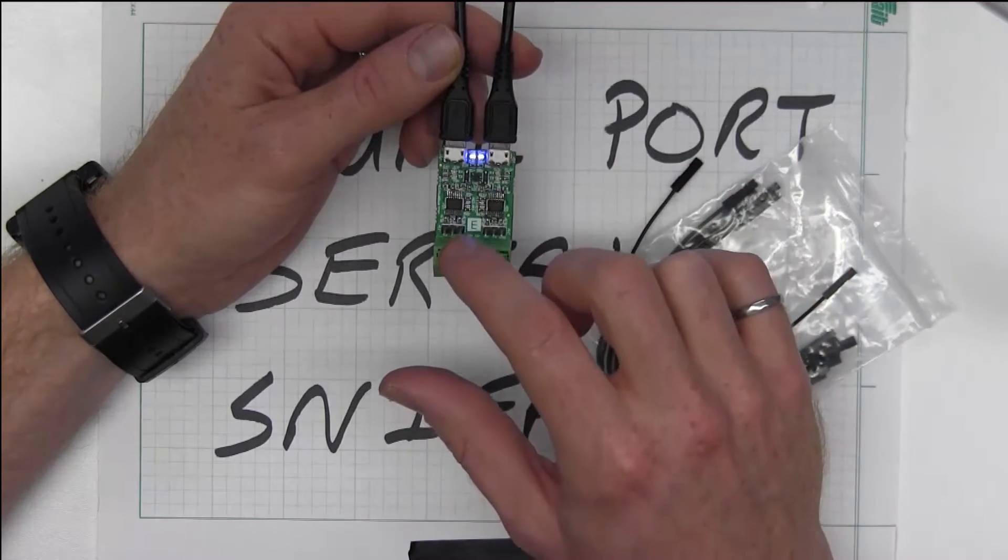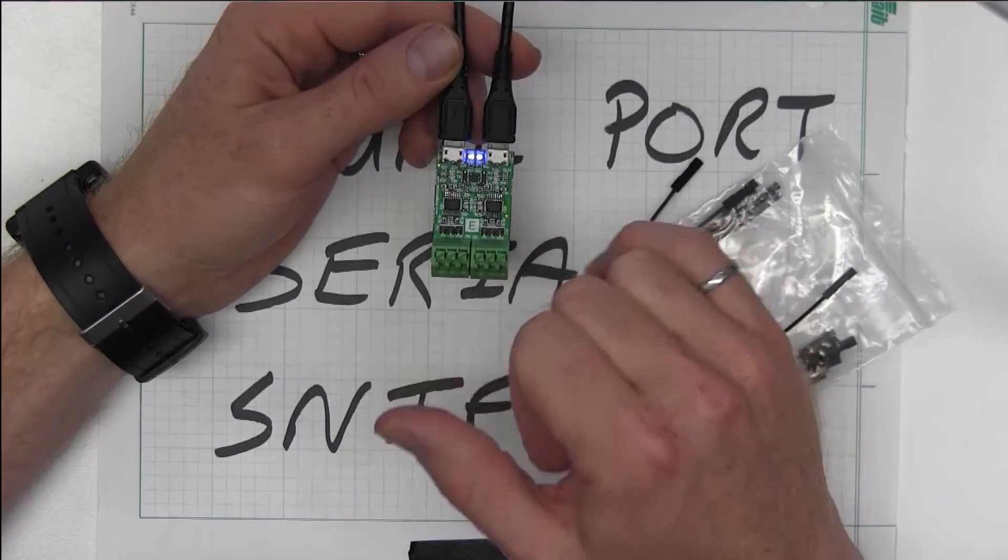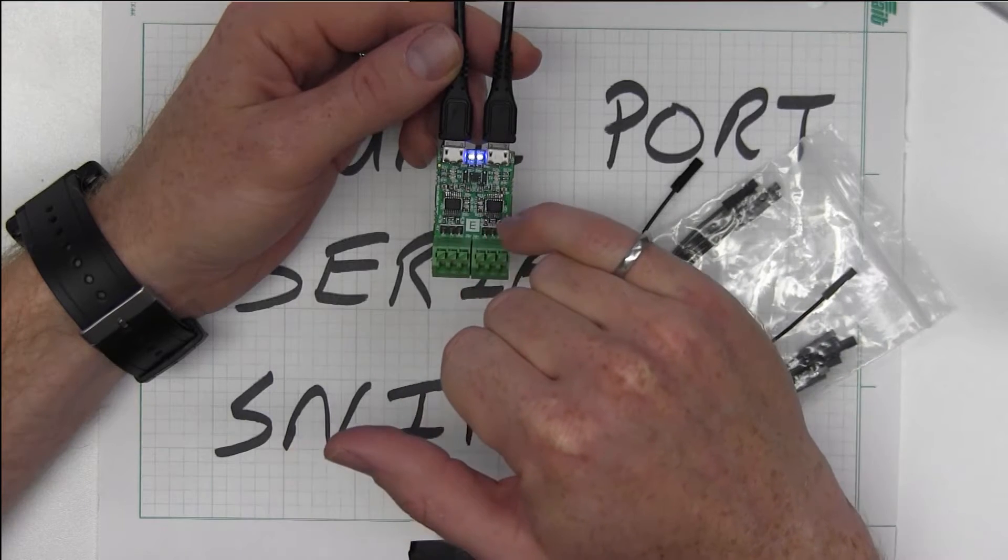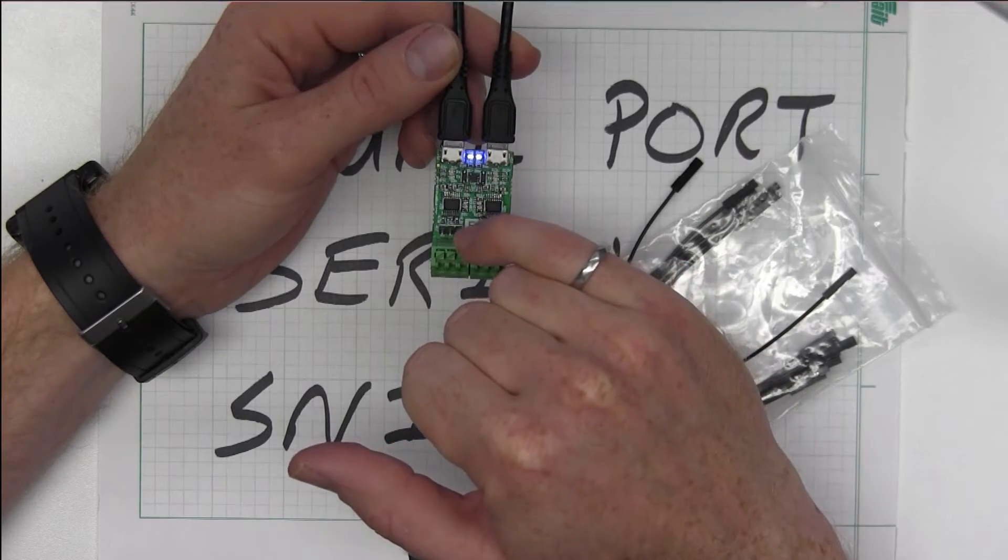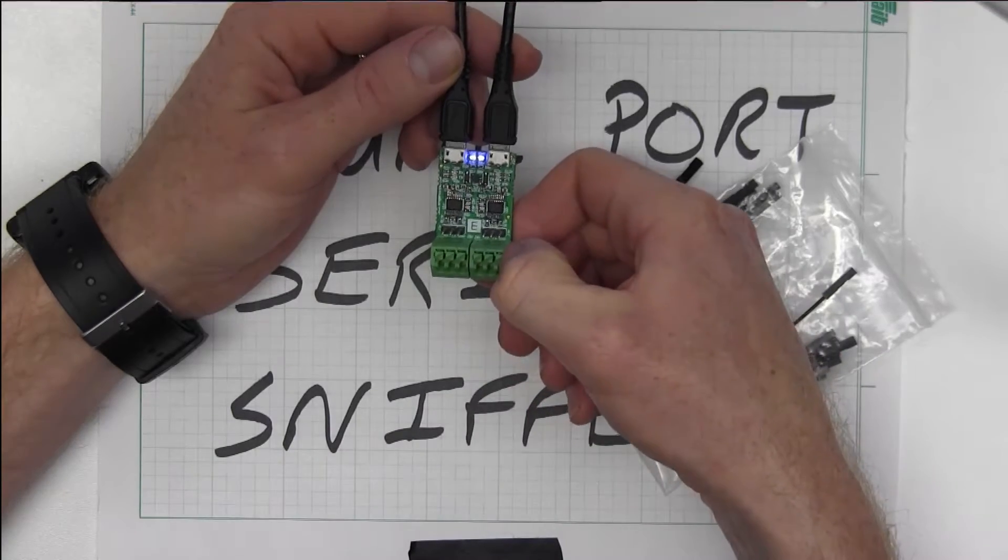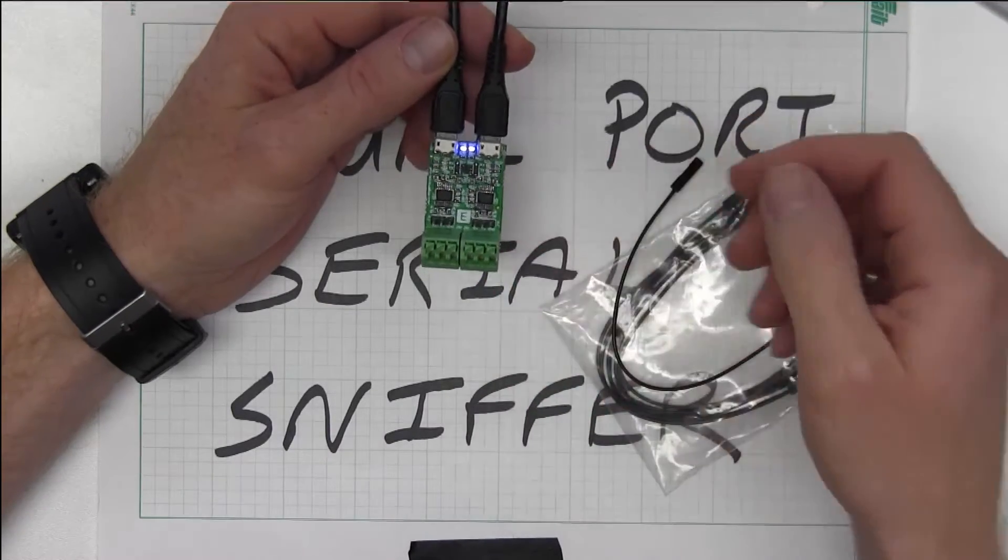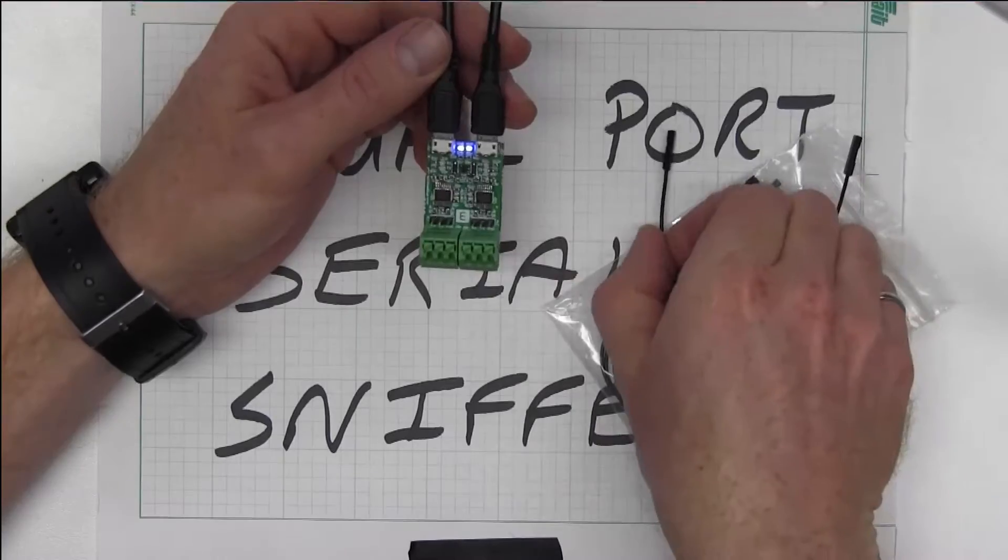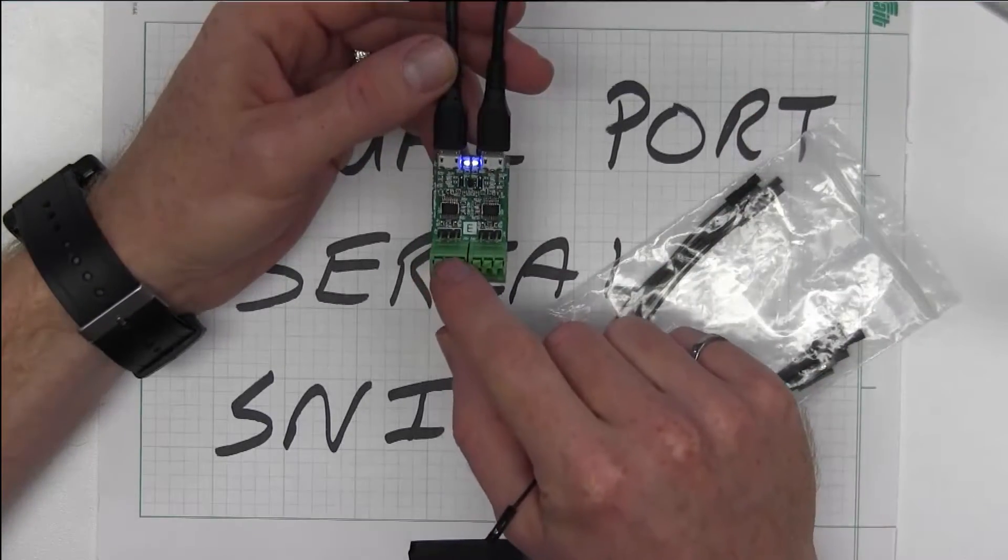The best part of this is the output connection. So we have both 100 thou headers here that you can attach wires directly to, and then we've got just spring clip connectors that you can put in other cables as well. So they're labeled on here, you've got your RX, TX, and ground.